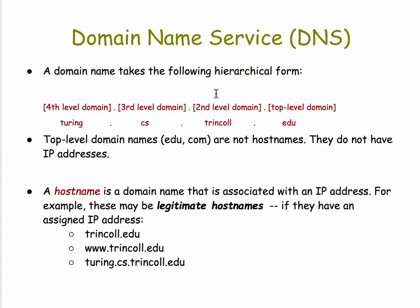In general, a domain name takes the following form: top level, second level, third level, fourth level. Using our familiar example of trincal.edu, that gives you the two top-level parts of the domain name. If I'm talking about the CS department's local network, that's cs.trincal.edu. And going further down to one of my computers called turing.cs.trincal.edu — that's a domain name for a particular host or computer on the internet.